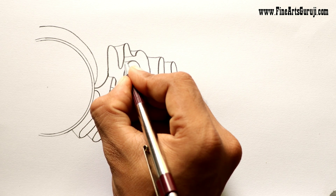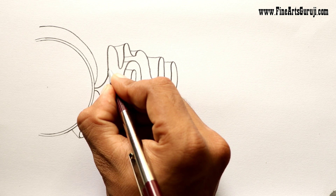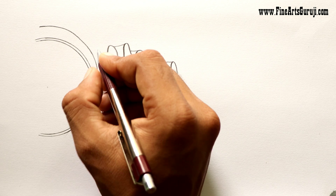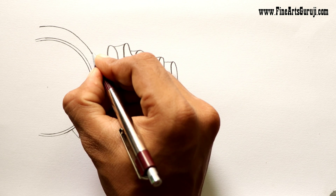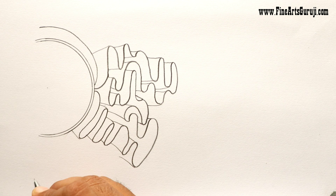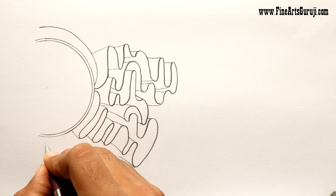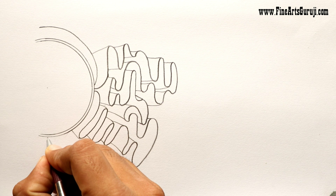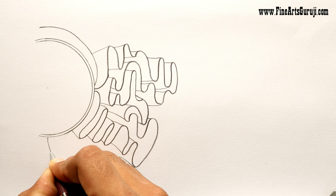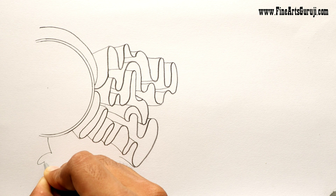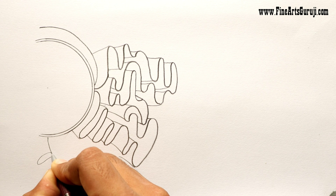After completing the whole rough endoplasmic reticulum diagram, I will now draw the smooth endoplasmic reticulum. Simply, we have to draw a line, then fold it like a wave and join it.